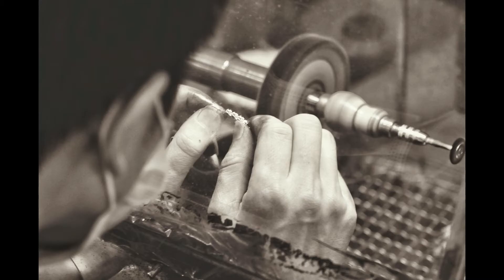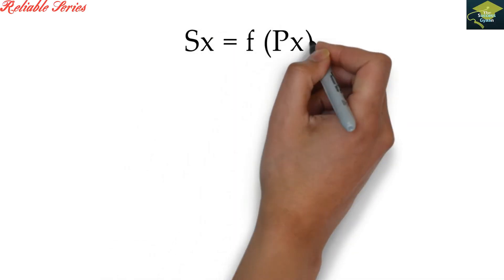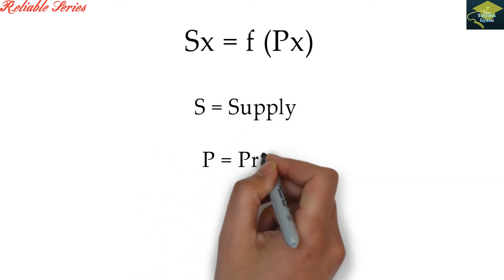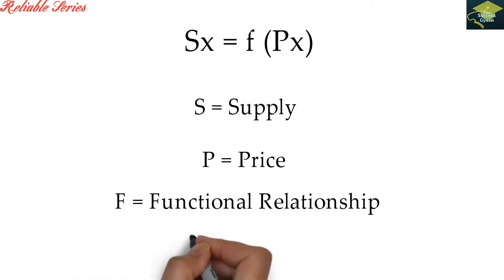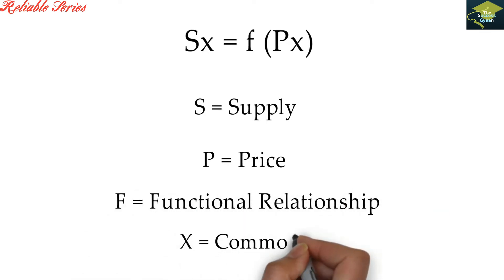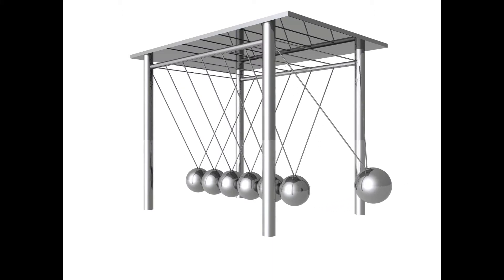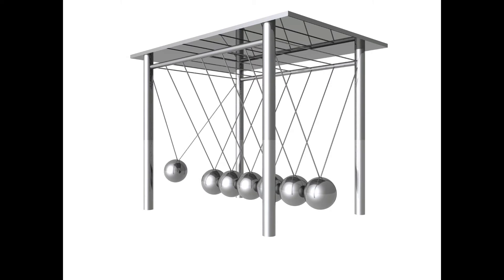Thus, law of supply expresses a functional relationship as Sx = f(Px), जहाँ S का मतलब है supply, P का मतलब price, f का मतलब functional relationship, और X is commodity, good or service. Thus, there is a direct relationship between price and supply.